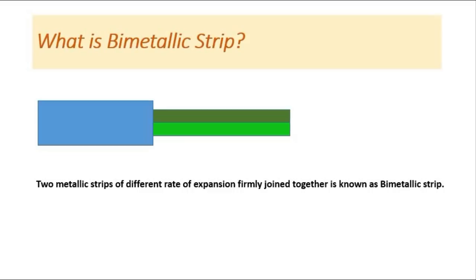Bimetallic strip — what do we mean by bimetallic strip? Here we have two bimetallic strips shown. A bimetallic strip means two strips made up of metal that are joined very firmly. This is the upper metal strip, and the thicknesses are kept very small because we want linear expansion only, not superficial expansion.